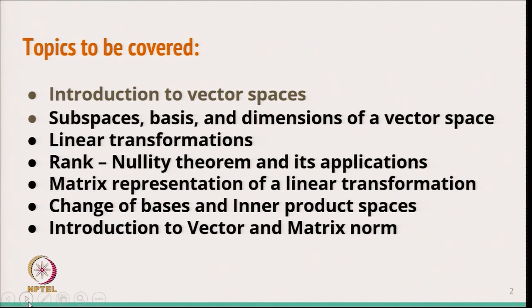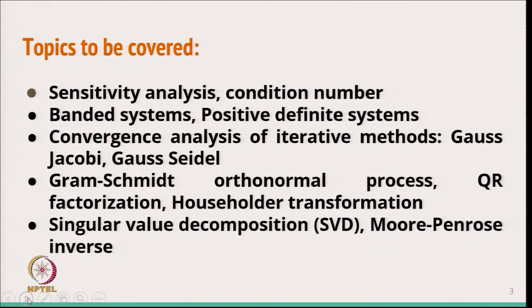After that, we will start with an introduction to vector and matrix norms — how we can find the difference or measure the magnitude of a matrix. Then we will also cover sensitivity analysis and the condition number of the matrix. We will discuss special types of matrices called banded systems and positive definite systems. We will also cover convergence analysis of iterative methods, for example Jacobi and Gauss-Seidel, where we need matrix norms. Then we will discuss the Gram-Schmidt orthonormal process, QR factorization, and Householder transformation.